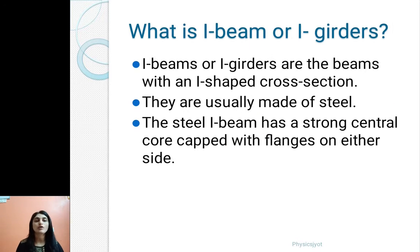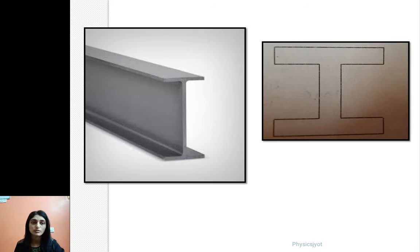Now when we talk about I-beams or I-girders, I-beams or I-girders are the beams with an I-shaped cross section. So see, this is the kind of beam which you must have seen. If we check like this, it looks like a letter I, basically that is why the name is given I-beam or I-girder.